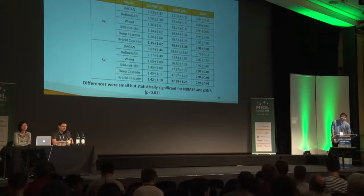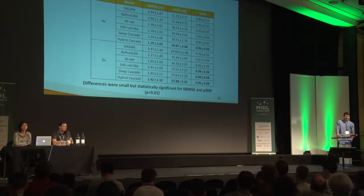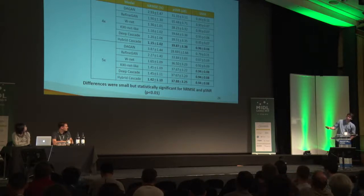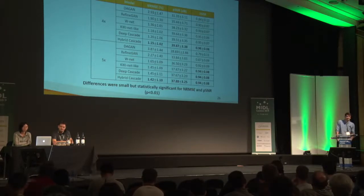Question: Can you comment on computational complexity and speed compared to other methods? Response: Testing speed is pretty much the same across methods. The RefineGAN model takes 72 hours to train on this dataset, while other models took about 8 hours. Reconstruction time using a GTX 1070 GPU was about 65 milliseconds per slice, so it's pretty fast.